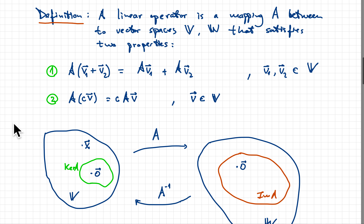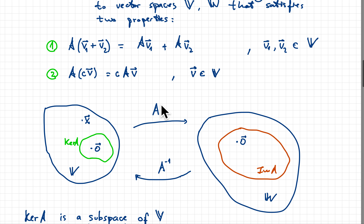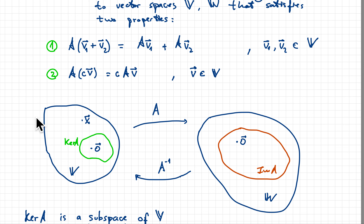We have a schematic of what operator A does. It maps vectors in space V — our domain — to another space W. It's not necessarily true that given all possible vectors in V, we get all possible vectors in W. Typically, the vectors of V will be mapped onto a subset of the vectors in W, and that subset is called the image of A.